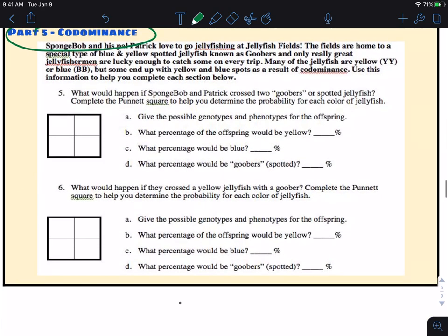Down here, it's a very similar situation. We're just talking about jellyfish. And so we've got the many jellyfish. We've got yellow, which would be YY in this one. We've got blue, which would be BB. And what we need to understand is that this thing called goobers are yellow-spotted, blue and yellow-spotted jellyfish.